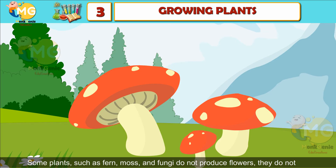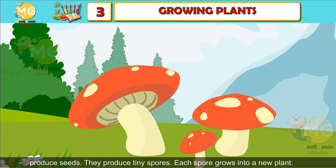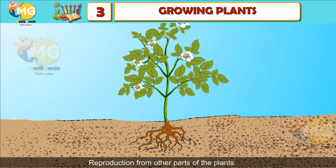Reproduction through spores: some plants such as ferns, moss, and fungi do not produce flowers and do not produce seeds. They produce tiny spores, and each spore grows into a new plant.